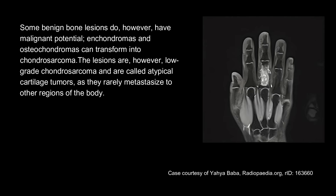Some benign bone lesions do, however, have malignant potential. Enchondromas and osteochondromas can transform into chondrosarcoma. The lesions are, however, low-grade chondrosarcoma and are called atypical cartilage tumors, as they rarely metastasize to other regions of the body.